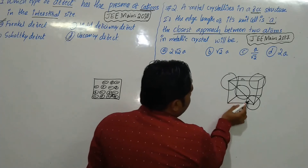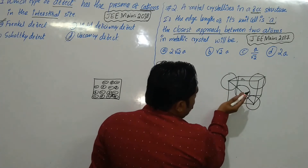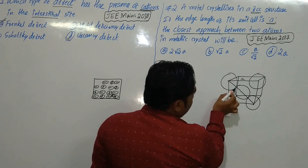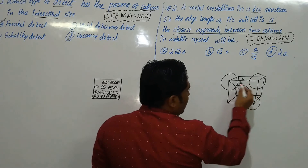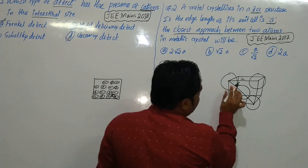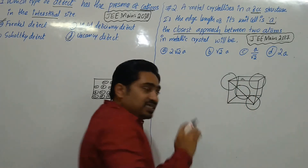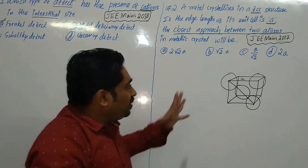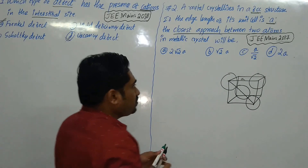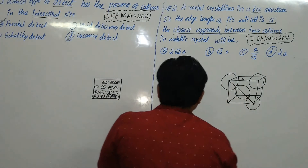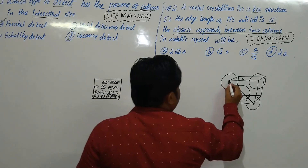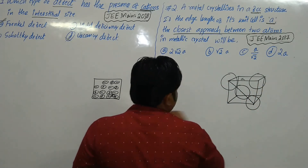If we calculate the length of the face diagonal, half of that will be the closest approach along the face. Between the value A (along the edge) and half the face diagonal, whichever is lesser will be our answer. The closest approach between the corner particles along the edge is directly A.